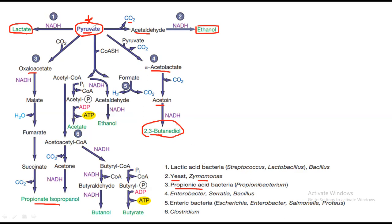The fifth type involves enteric bacteria — E. coli, Enterobacter, Salmonella, and Proteus. Pyruvate is first converted into formate, and then the formate reacts with acetaldehyde to produce ethanol. The sixth type is conducted by Clostridium, in which pyruvate is converted into acetate — mostly acetic acid and vinegar are produced by this type of fermentation.